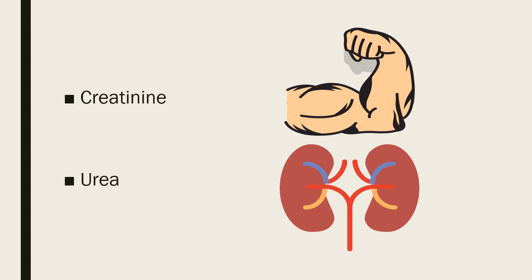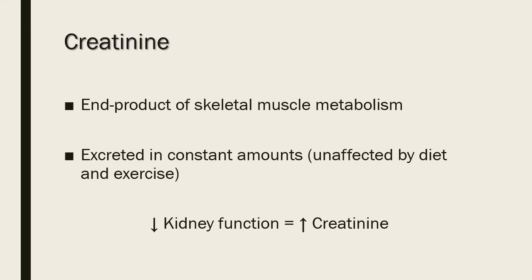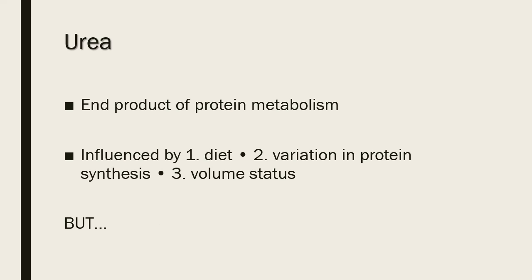Moving on from electrolytes to creatinine and urea — two markers used to assess renal function. Creatinine is an end product of creatine metabolism, formed from skeletal muscle and excreted in constant amounts. It is completely filtered by the kidneys and relatively unaffected by diet, exercise, or urine volume, meaning its clearance is a direct and accurate measure of kidney function. If kidney function suffers, creatinine will rise. Any renal impairment — pre-renal, renal, or post-renal — will cause creatinine to rise. Urea is an end product of protein metabolism, formed in the liver and excreted by the kidneys. Unlike creatinine, urea is influenced by a high protein diet, variables in protein synthesis, and volume status, making it less ideal for measuring GFR specifically. However, combined with creatinine, the creatinine-urea ratio can help differentiate pre- and post-renal etiologies.